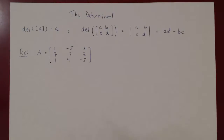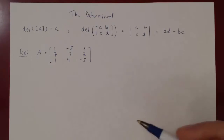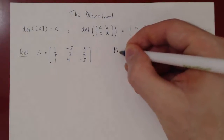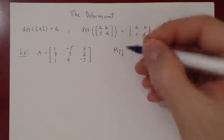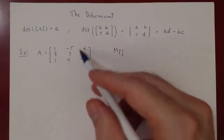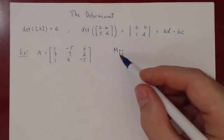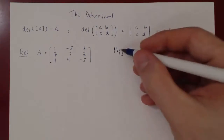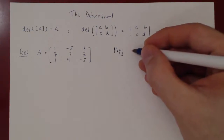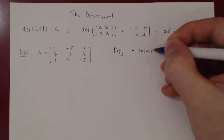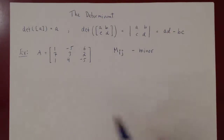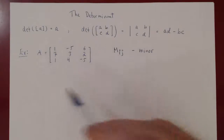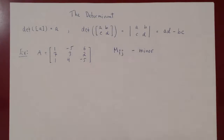Before we do so, there are two quantities we have to define. The first one is the minor, the second one is the so-called cofactor. We write M_ij, because for each entry of the matrix A, given the row and column position, there is a determinant attached to it. M_ij is called the minor, and it is the determinant obtained from A after we delete the ith row, jth column.